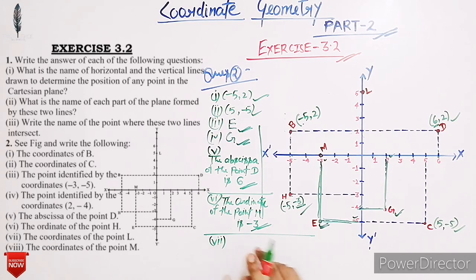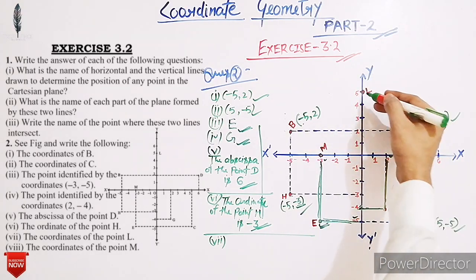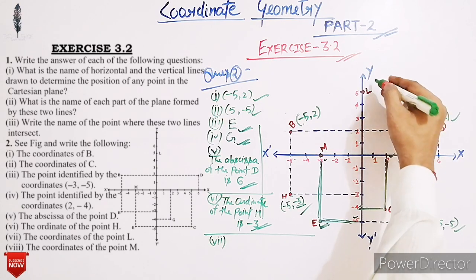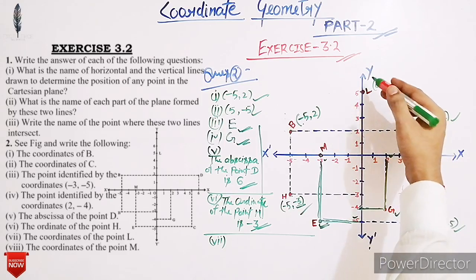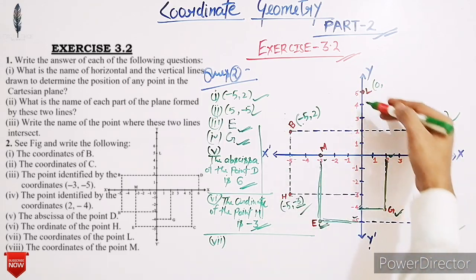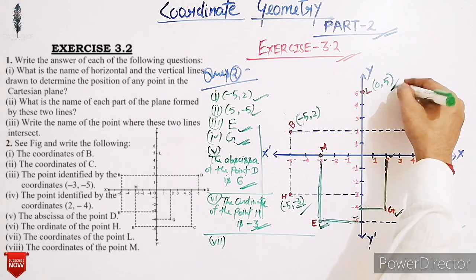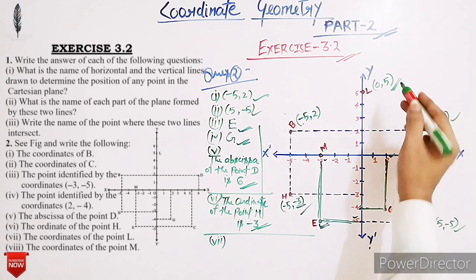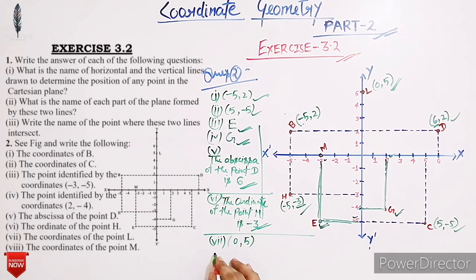Now we have to find the coordinates of point L. In the figure, point L lies on the y-axis, so its x-coordinate is 0 — because the x-coordinate of every point on the y-axis is 0. The y-coordinate of point L is the distance from the x-axis, which is 5 units. Point L lies on the positive y-axis, so its coordinates are (0, 5).